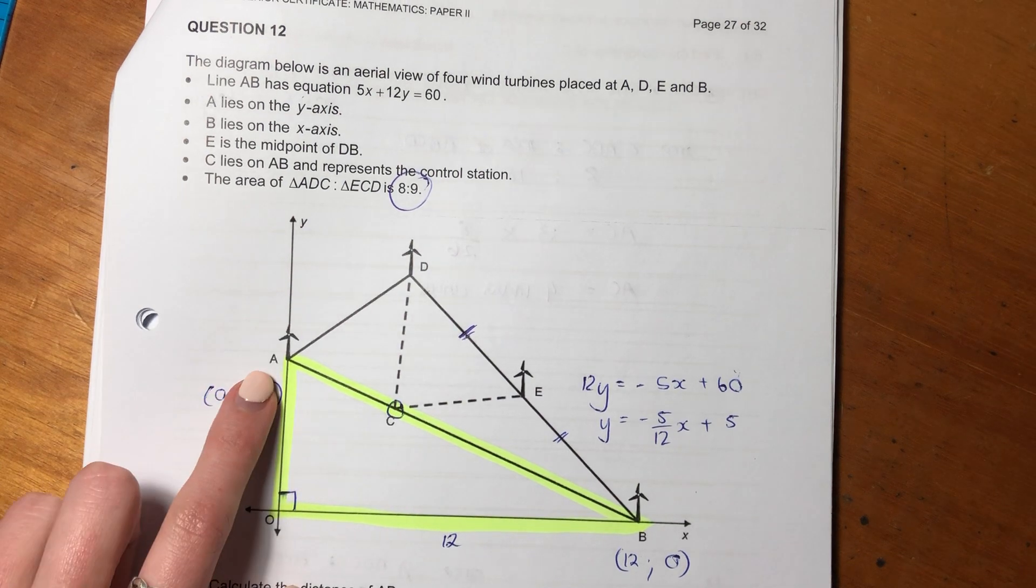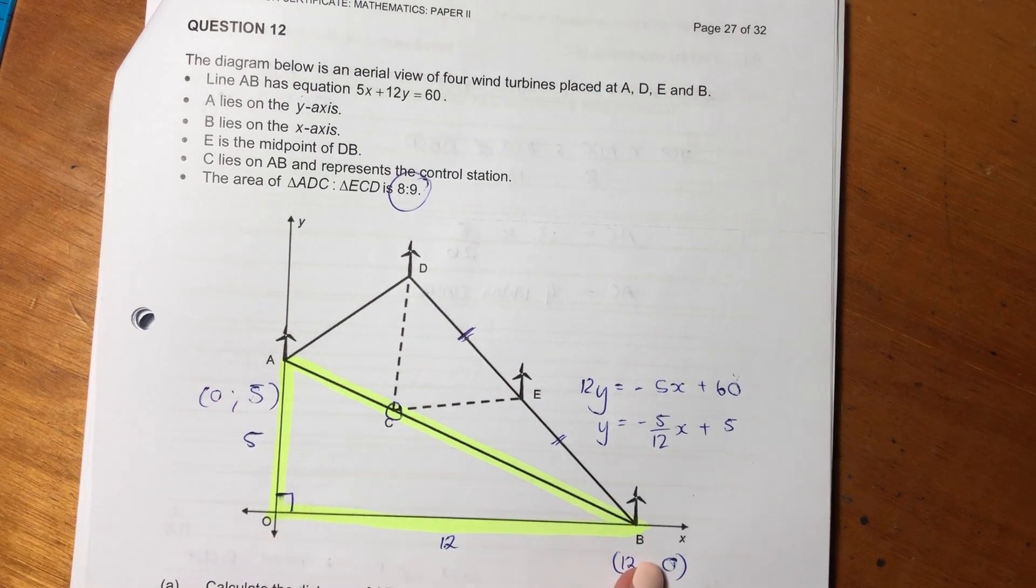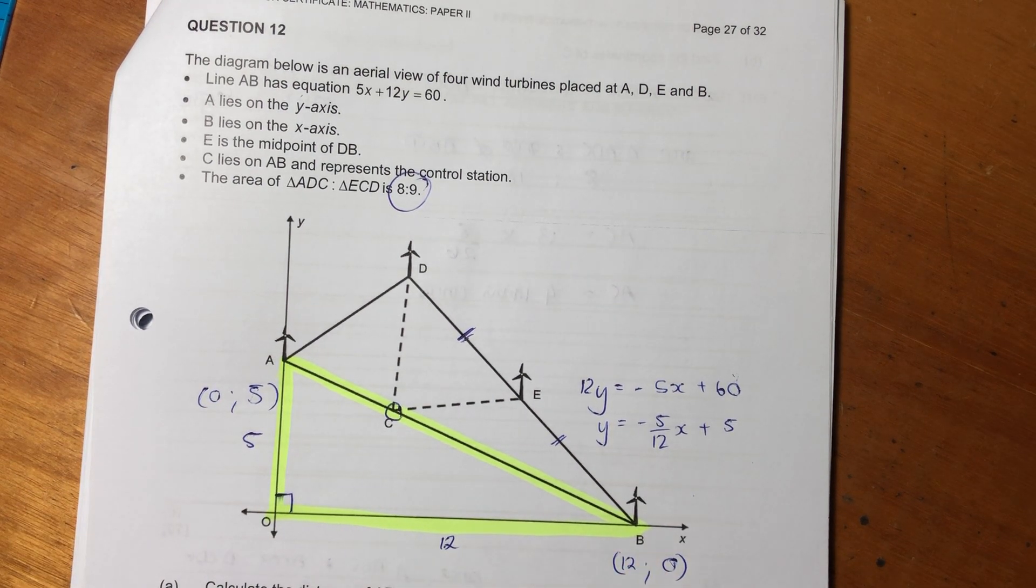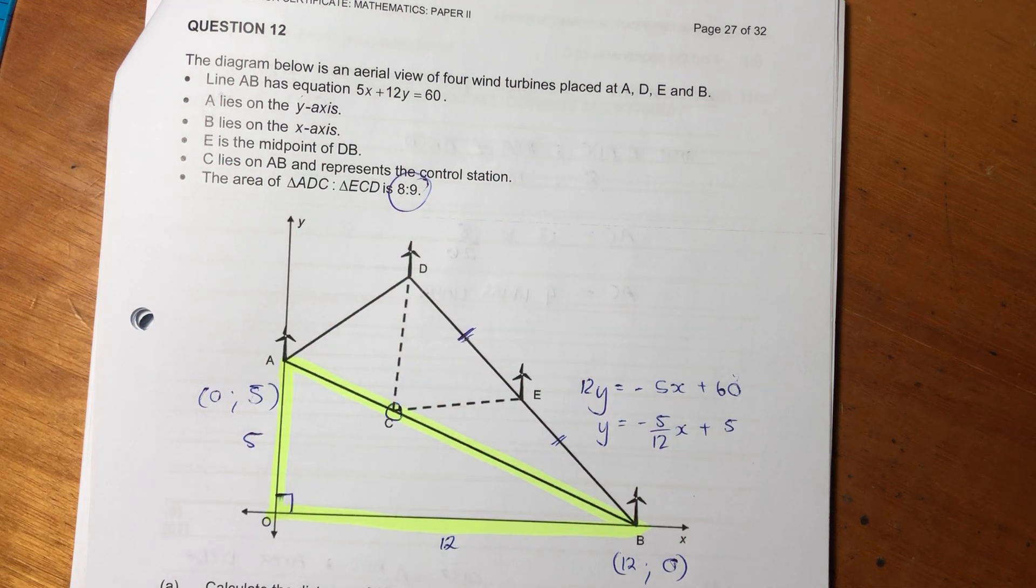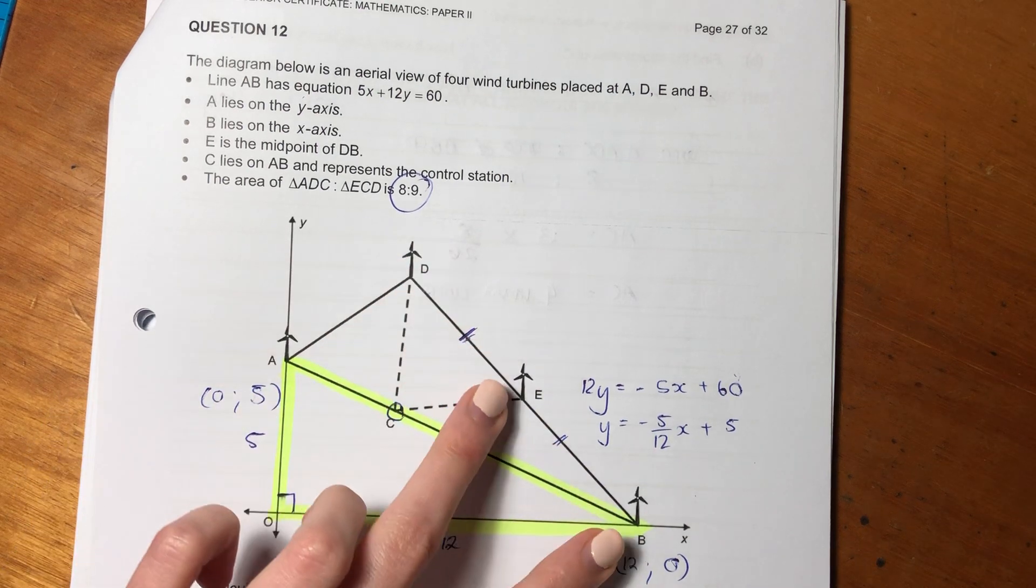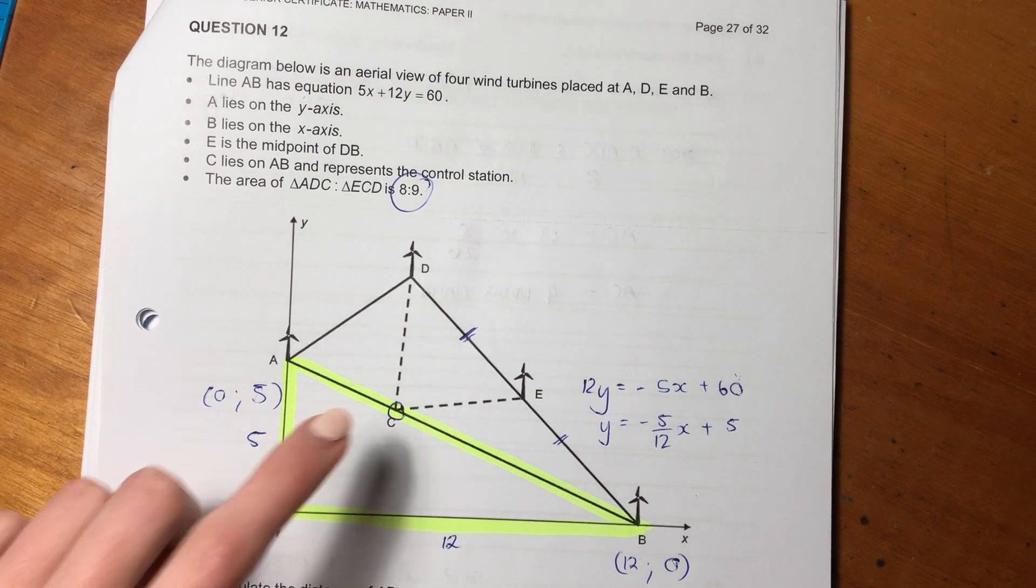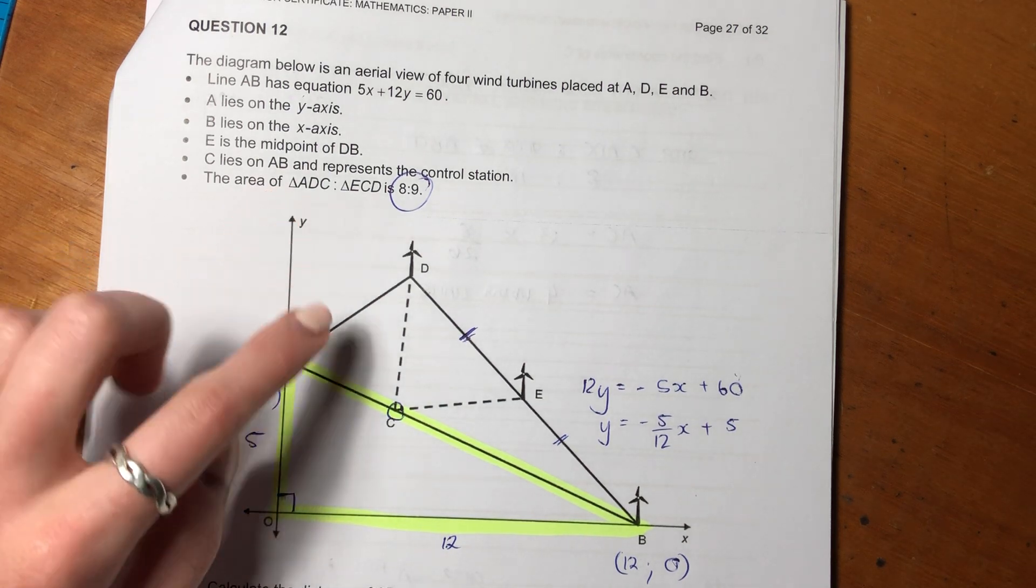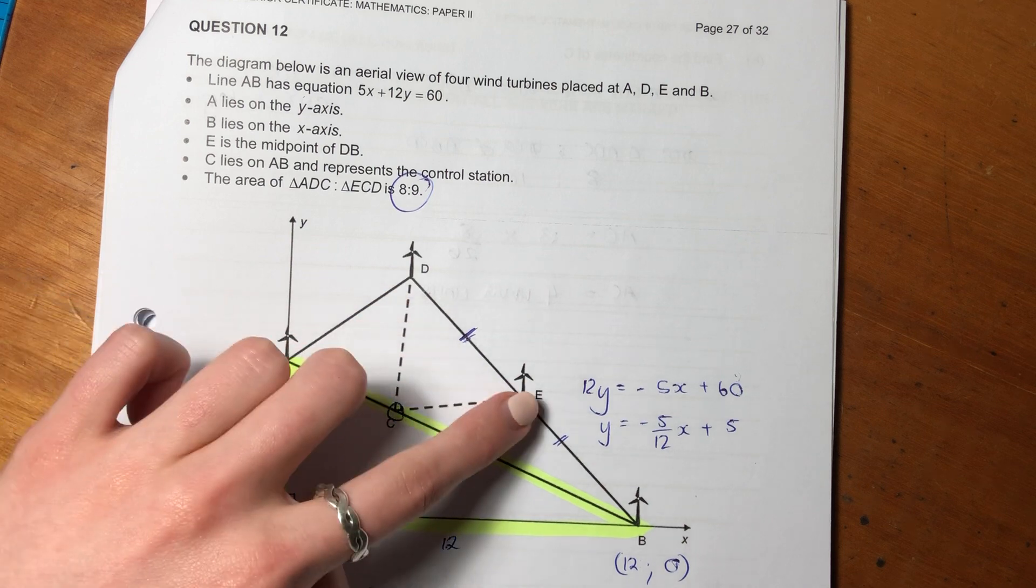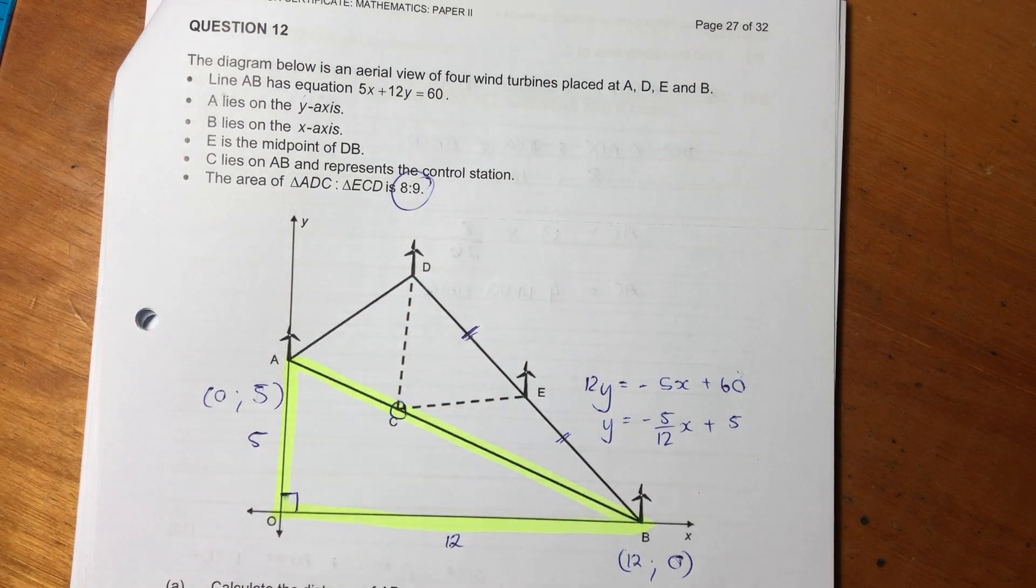Then A lies on the y-axis, so it is the y-intercept. B lies on the x-axis, it is the x-intercept of that line AB. Then it says E is the midpoint of DB. So what that means is that length is equal to that length, because midpoint means to cut in half. Then it says C lies on AB and represents the control station, and it says the area of triangle ADC to ECD is 8 to 9. So we're probably going to have to use that ratio, and we're going to have to use all this information to answer what we need to answer.